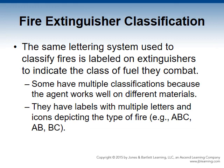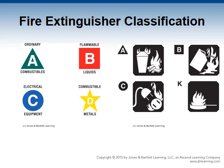The same lettering system used to classify fires is labeled on extinguishers to indicate the class and fuel they combat. Some have multiple classifications because the agent works well on different materials. They have labels with multiple letters and icons depicting the type of fire — A, B, C, and D — with pictures to help differentiate what the extinguisher is used for.